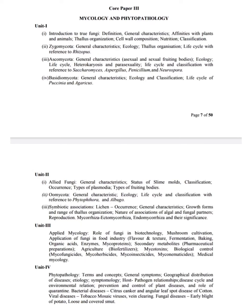Next: Describe host-pathogen relationship in plant disease. Next: Give an account of disease cycle. Describe the impact of environment on disease cycle. Next: Describe the prevention and control of plant diseases. Also, add a note on the role of quarantine.